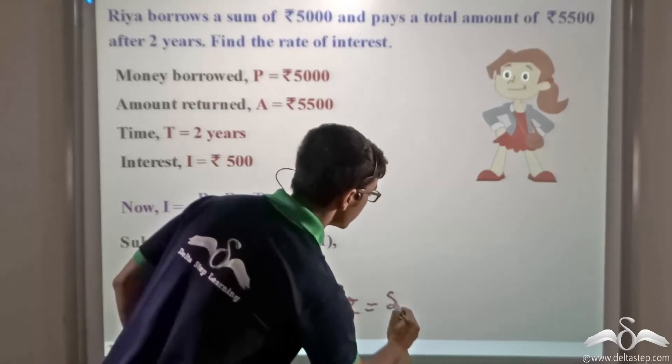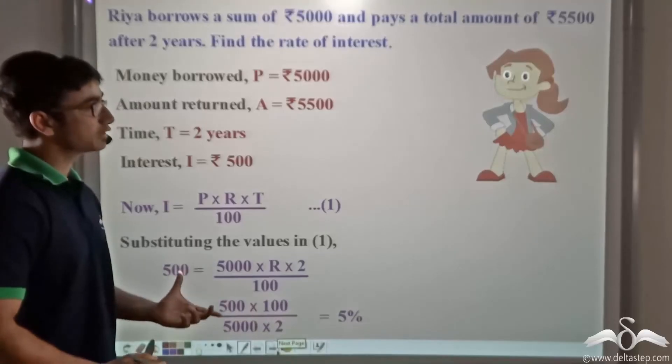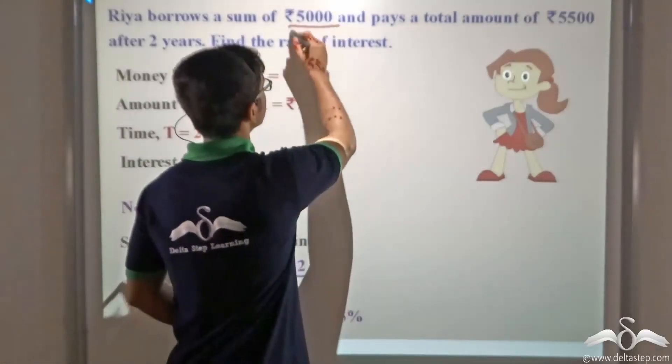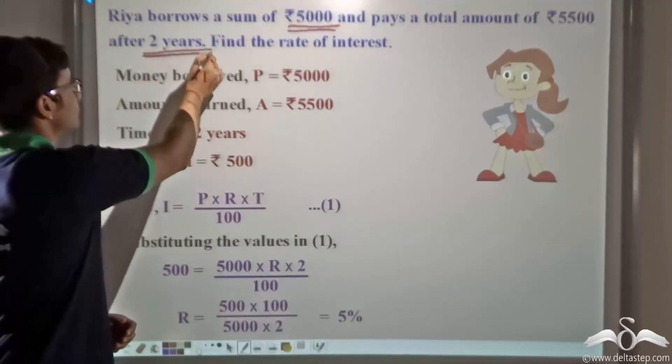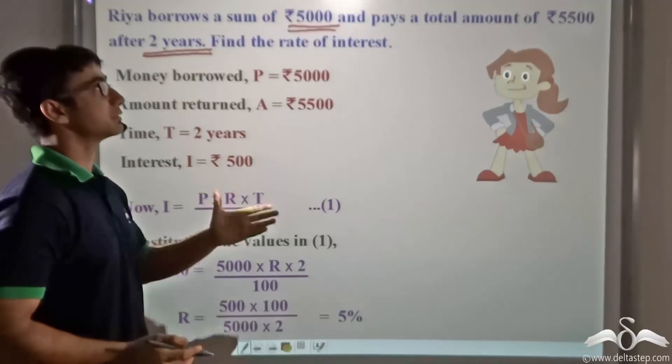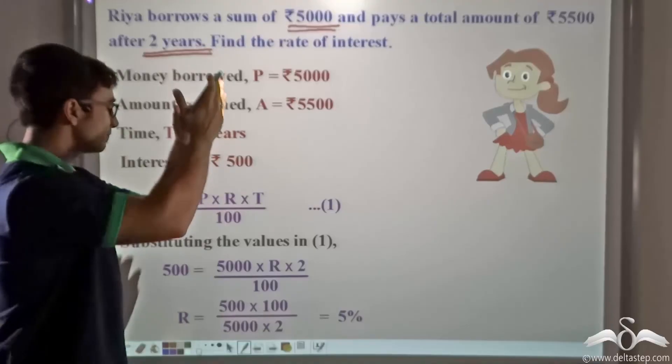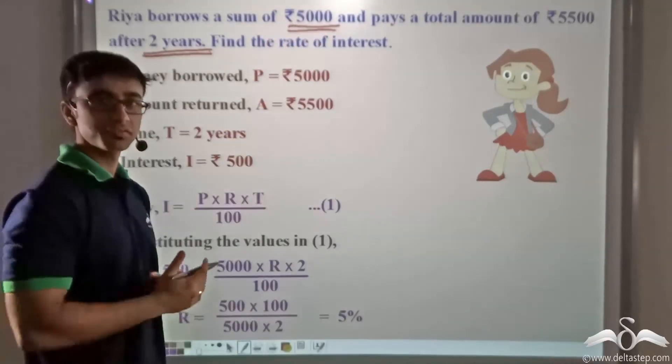That is nothing but 5%. So 5% is the rate of interest at which Rhea is borrowing the money, Rs. 5000 for a total of 2 years, and the amount of money, as had been given by the sum which she's paying back, is nothing but the principal plus the simple interest, that is equal to Rs. 5500.